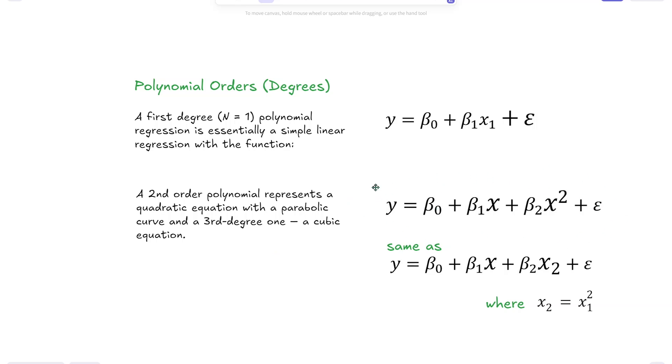It's essentially the same as a multiple linear regression. If we assume that x2 is equal to x1 squared, those are essentially the same, but we analyze them differently. In a multiple linear regression, we would look at the different predicted variables. While in a polynomial regression analysis, we're mostly looking at the function as a whole.